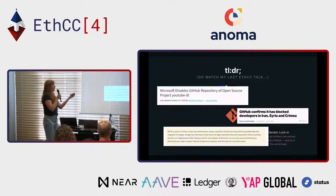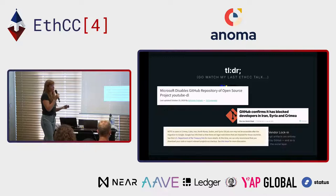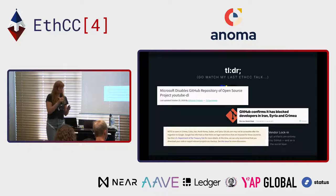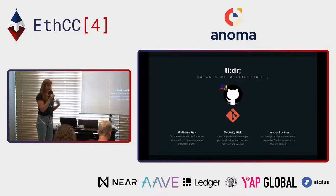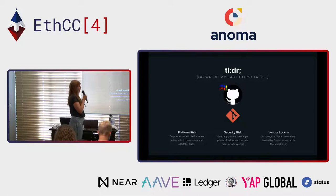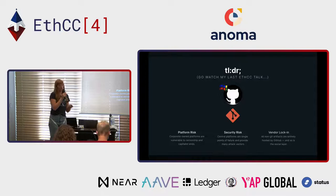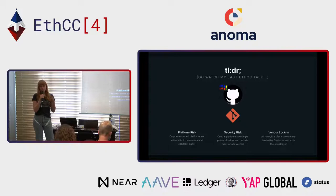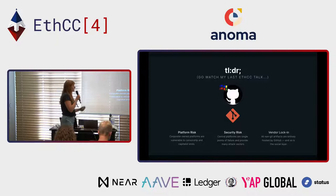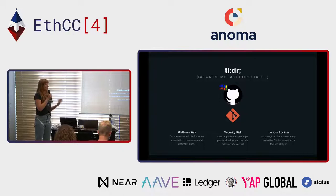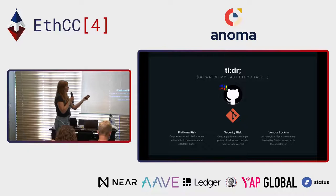Another example is GitHub blocking developers in Iran, Syria, and Crimea — same with GitLab — due to US sanctions. These are US companies able to, like any other platform, restrict who uses and who can access the data on their platforms. There's also this great piece from Chris Dixon at A16Z about the argument for decentralization: ultimately all centralized platforms will leave their users vulnerable to extraction because of how they're systemically designed.